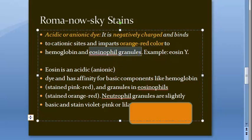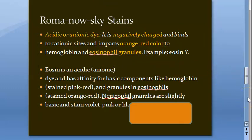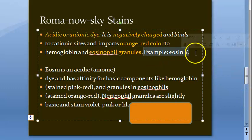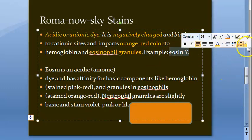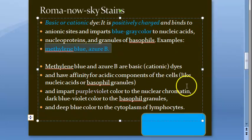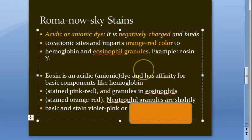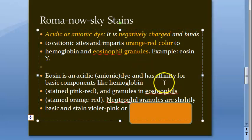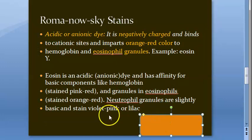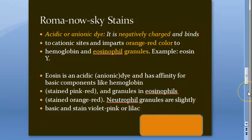Eosinophils have granules that appear orange-red — you will see that in our peripheral smear. The example of the acidic dye is eosin Y. Eosin is an acidic dye with affinity for basic components like hemoglobin. Neutrophil granules are slightly basic, hence they stain pink or lilac.